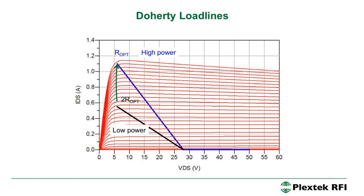We can't have this black load line at high power, because when we drive the device harder we'll end up in the knee region. What we'd ideally like is a load line that at low power is like the black load line, but at high power transforms into the blue load line. And that's what the Doherty amplifier does.